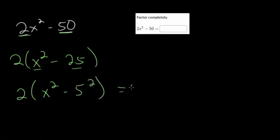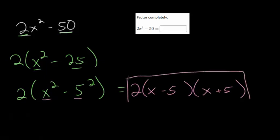And again, when we factor this into its two binomials, it's going to be the first one minus the second one. So x minus 5, and then the first one plus the second one, x plus 5. And so this will be our final answer. Though to know for sure, you just have to re-multiply it out.